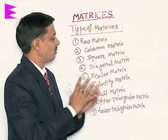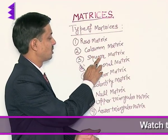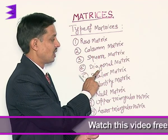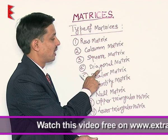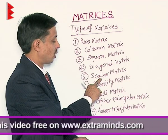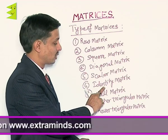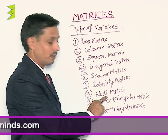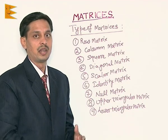To summarize: row matrix has a single row; column matrix has a single column; square matrix has equal rows and columns; diagonal matrix has all elements other than the diagonal equal to 0; scalar matrix has non-zero but equal diagonal elements; identity matrix has all diagonal elements equal to 1; null matrix has all elements equal to 0; and finally upper triangular and lower triangular matrices.